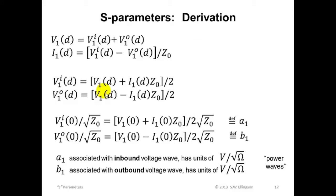Now, I want to do just two more simple things. First, I'll divide each side of each equation by the square root of Z-naught. That's what I'm doing in these equations. And then I'm going to evaluate both these equations for d equals zero. That means directly at the input port. And I'll call the resulting quantities A sub one and B sub one.